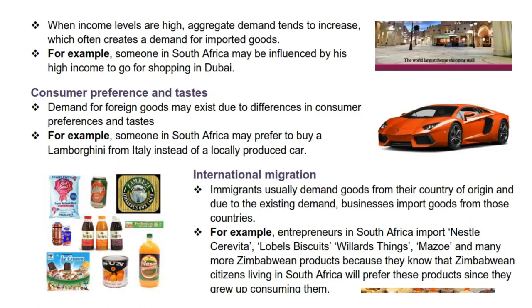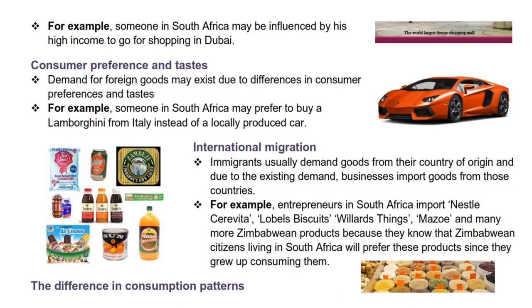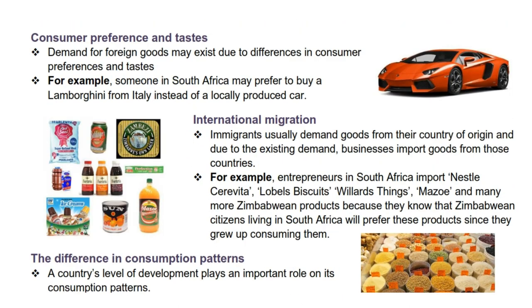Next is consumer preference and tastes. Demand for foreign goods may exist due to differences in consumer preferences and tastes. For example, someone in South Africa may prefer to buy a Lamborghini from Italy instead of a locally produced car.